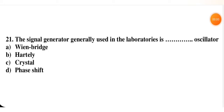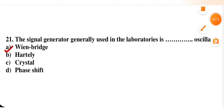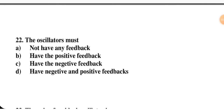Next question: the signal generator generally used in laboratories is — Wien bridge, Hartley, crystal, or phase shift oscillator? We use the Wien bridge oscillator in laboratories, so option A is the right option.